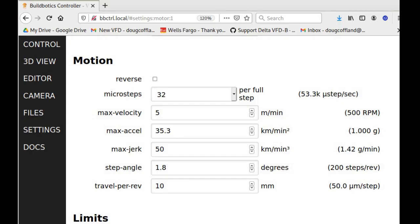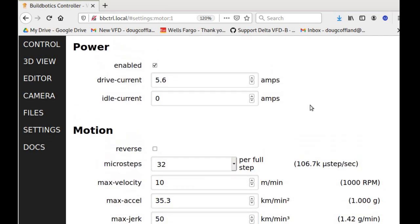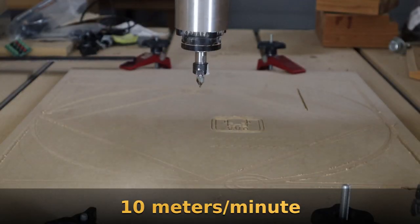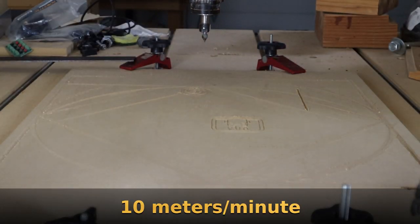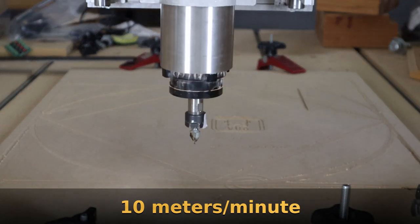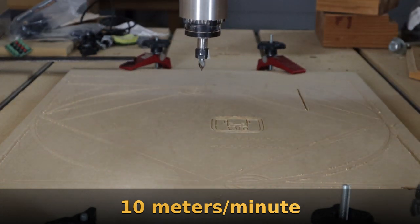The next few clips show my y-axis running at various speeds. The goal is to find the maximum speed that it can run without stalling. I'll start at 10 meters per minute.